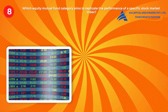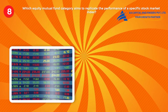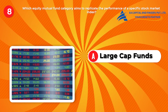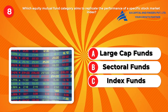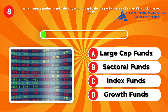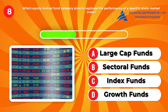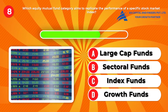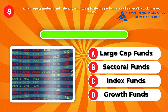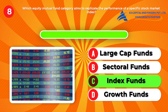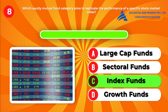Question eight: Which equity mutual fund category aims to replicate the performance of a specific stock market index? A, large cap funds. B, sectoral funds. C, index funds. D, growth funds. Answer: C, index funds. These funds passively track the performance of a designated market index, offering broad market exposure with low management fees.